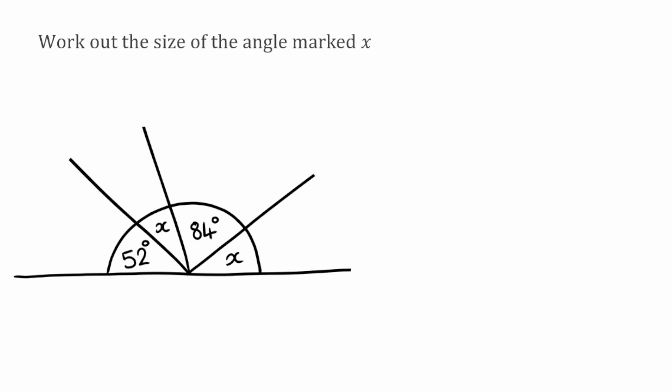Okay and for this very last question again we're figuring out the size of the angle marked X, but this time we have two of them. So what I'm actually going to do for this one is I'm going to collect the like terms because we're adding all these angles together and they should add up to 180 degrees. So I'm going to start with the X's, so I've got an X here and another X here. So if I add them together that should give me 2X.